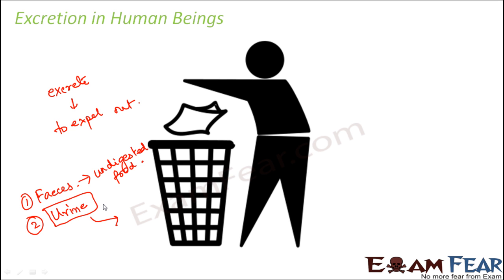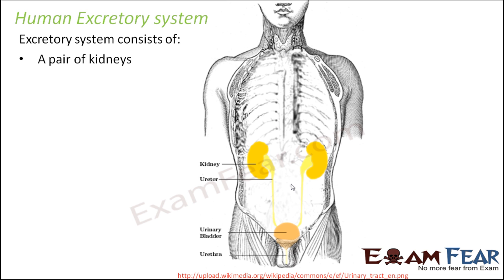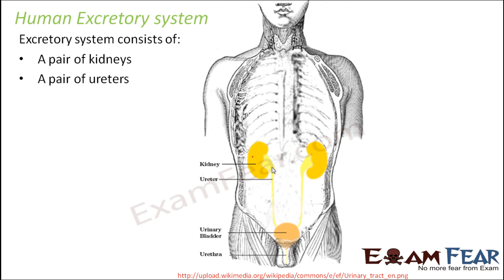Before we go ahead, it is important to know the various parts which together form the human excretory system. The excretory system has been highlighted in yellow. It consists of a pair of kidneys — left and right kidney. From each kidney, a tube-like structure connects it to the urinary bladder; these are called ureters, with one ureter arising from each kidney.